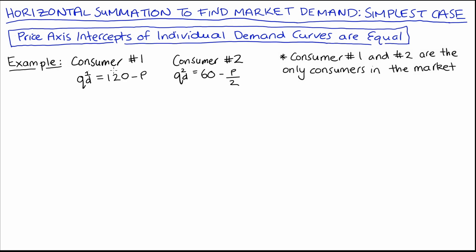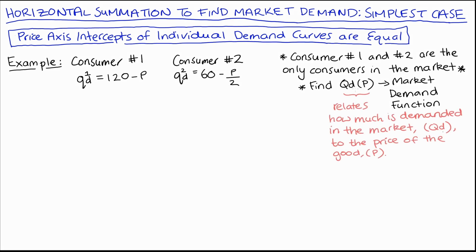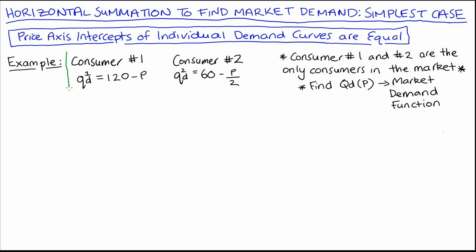Consumer number one and consumer number two are the only two consumers in the market for this good. Using our consumers' individual demand functions, we're going to find our market demand function, which is QD of P — an equation which relates the total amount demanded in the market to each price P. And we'll also draw out our market demand too. The first thing I'm going to do is draw out the demand curves of our individual consumers just next to one another — it's a useful first step.